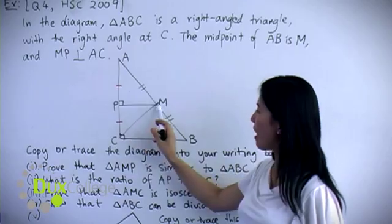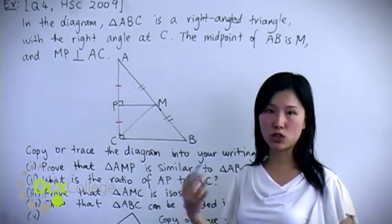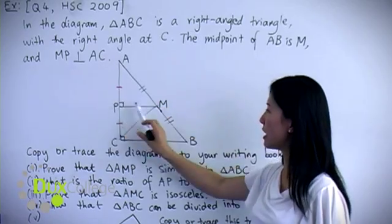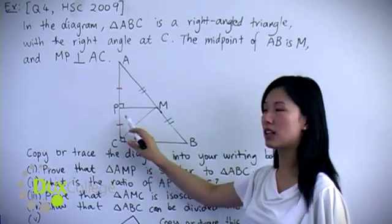PM is common, and angle APM equals angle CPM because both equal 90 degrees. So these two triangles are congruent by SAS. Hence AM equals CM, as they are corresponding sides of congruent triangles. Therefore triangle AMC must be an isosceles triangle.